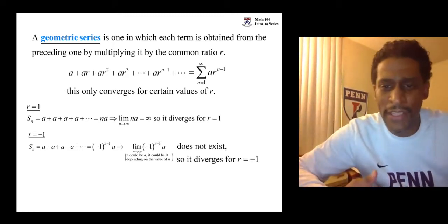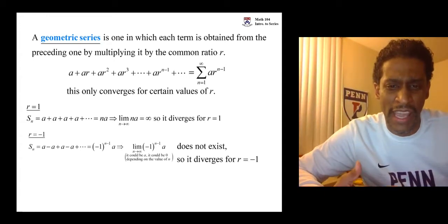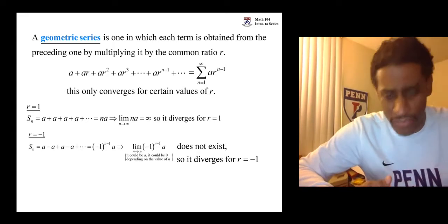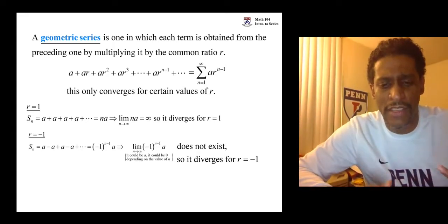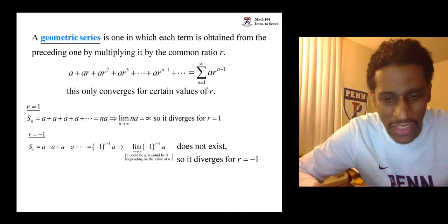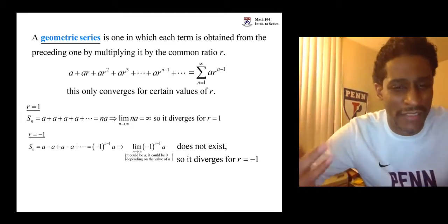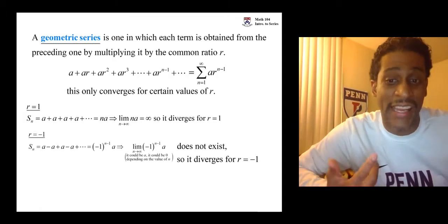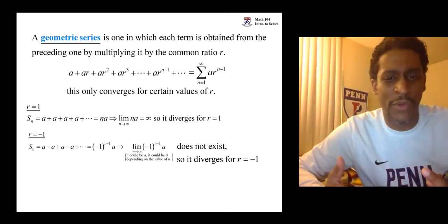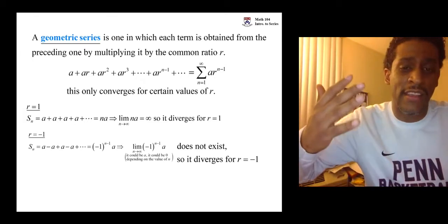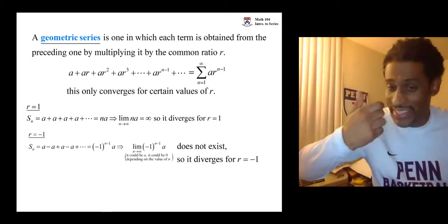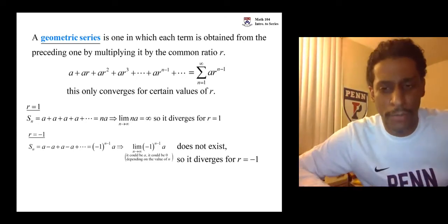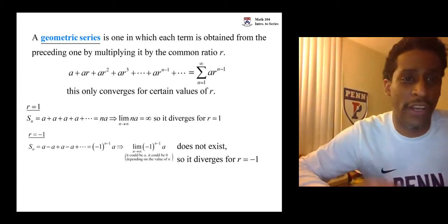Basically, it'll be A for odd and for some terms it depends on what N is as you go to infinity. But as N goes to infinity, there's no parity. There's no odd or evenness to infinity. What happens is the limit does not exist. When the partial sum sequence has an infinite limit or a limit that does not exist, the series will diverge. So for 1 and for negative 1, it diverges.